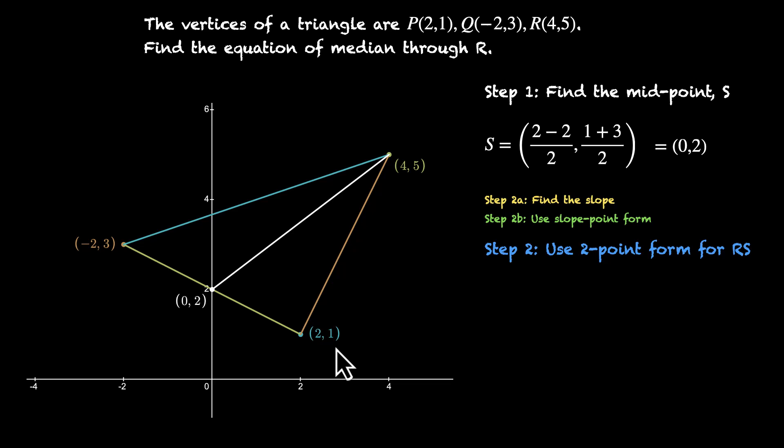This is S (0,2). This is P (2,1). This is Q (-2,3). And this is our R (4,5). Now the median passes through R and passes through S. This is the line that we need.